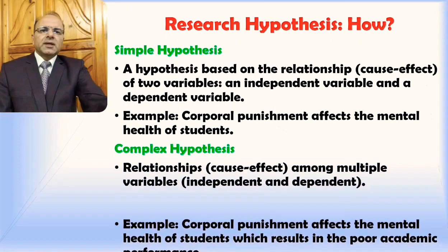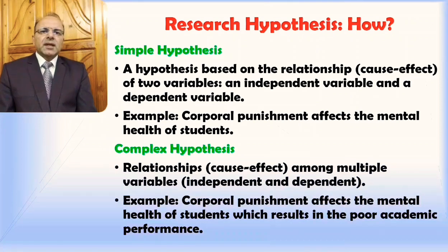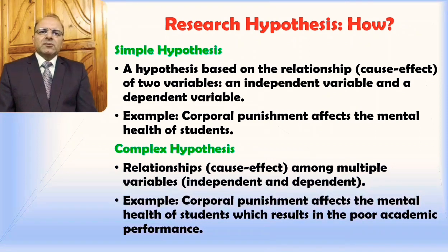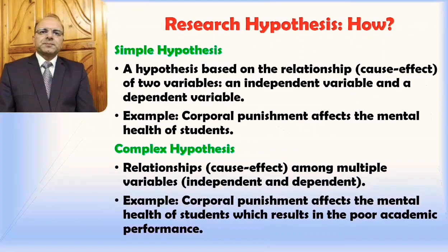There are some further types, including simple hypothesis. A simple hypothesis is based on the cause-effect relationship of two variables — an independent variable and a dependent variable. An example of this type could be: corporal punishment affects the mental health of students. Here, corporal punishment is the independent variable and mental health is the dependent variable, establishing a relationship between these two in this particular hypothesis.